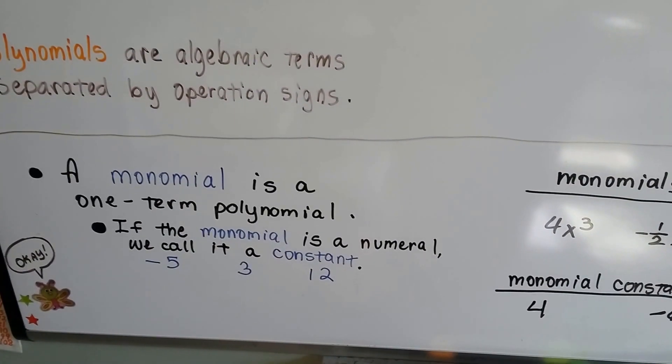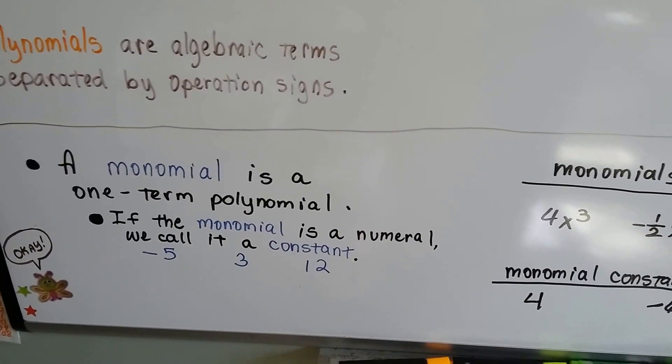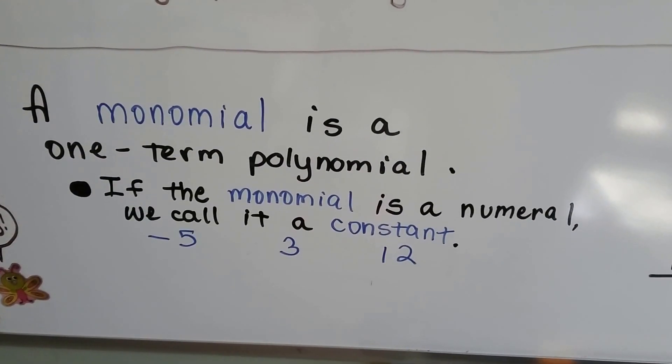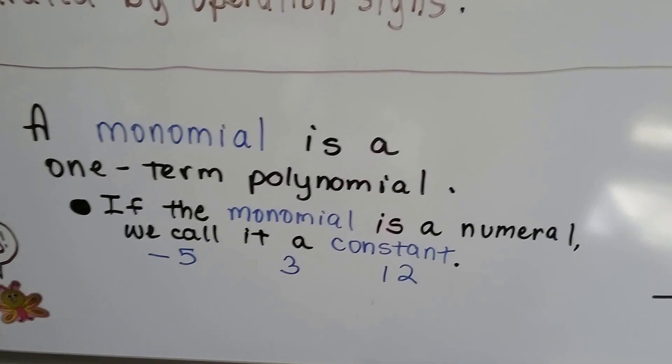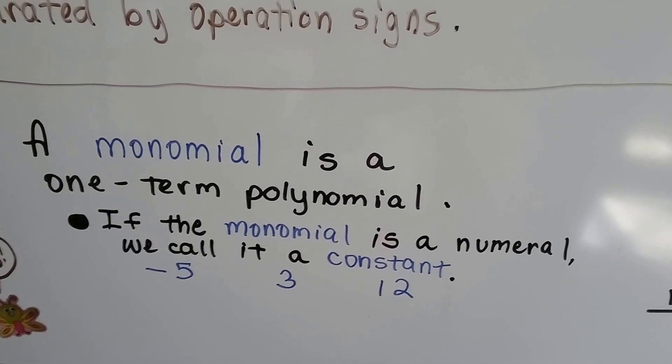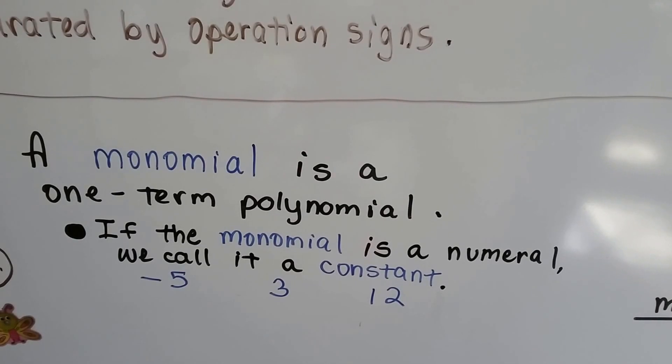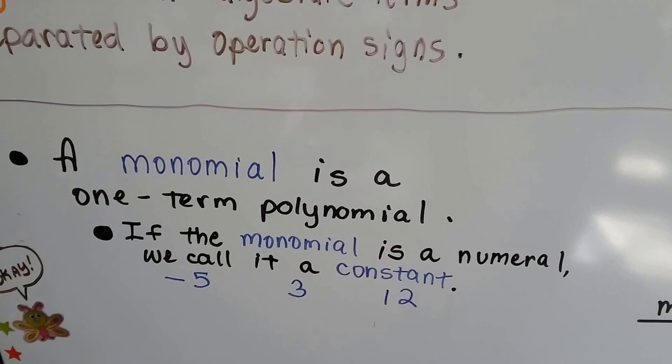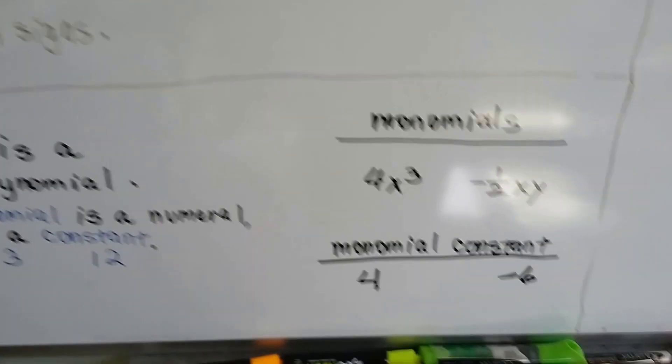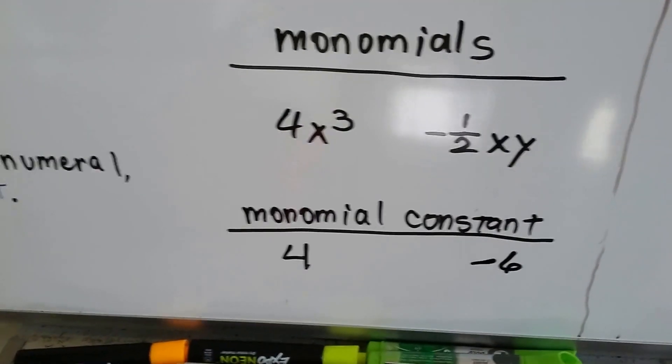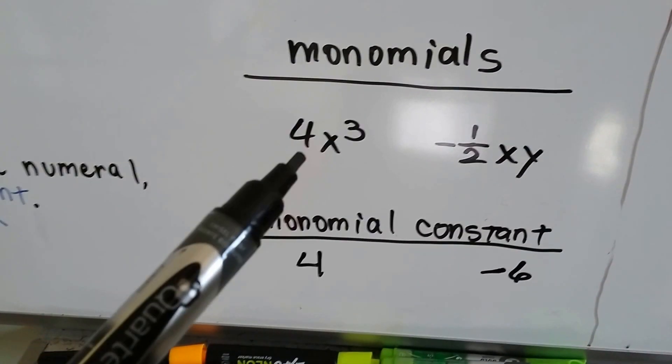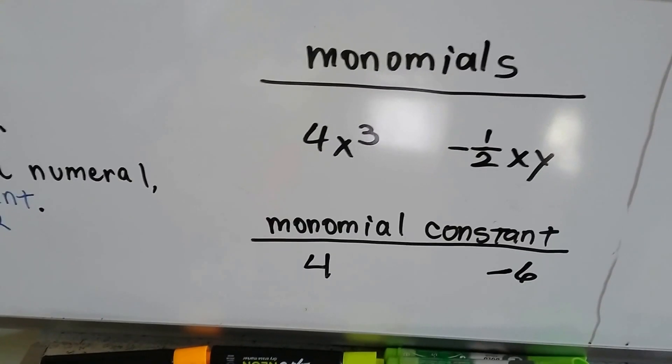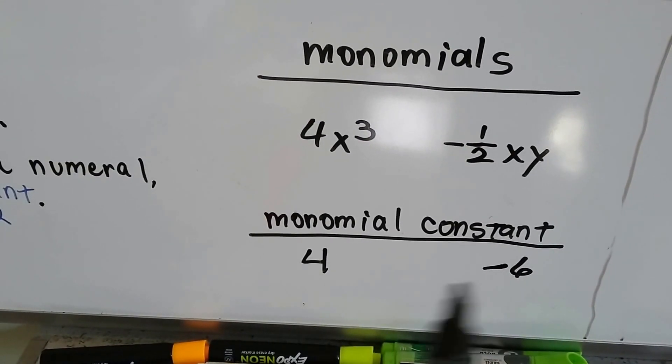A monomial is a one-term polynomial. And if the monomial is a numeral, a number by itself, we call it a constant. So a negative five by itself, or a three by itself, or a twelve by itself. There's no variables. There's no exponents. There's no plus or minus sign to add it to another term. It's just one term, one number by itself. Then it's a constant. So these are monomials. 4x to the third power is a monomial. And negative half xy is a monomial. They're just one term. But here's monomial constants. See how they're just a number?